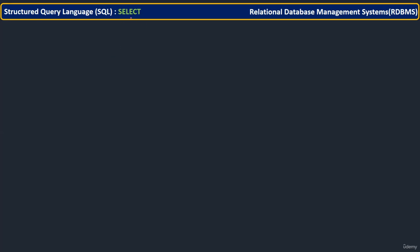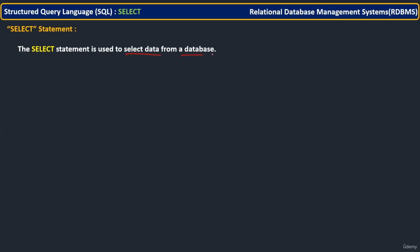So let us try to understand this SELECT command overall first of all, and then we will deep dive further. So for what purpose are we using this? The SELECT statement retrieves the data from the database — very simple. Whichever data you want to show as the output or whichever data you want to retrieve, accordingly we have to write down our SELECT statement. It will retrieve the required data from the database.